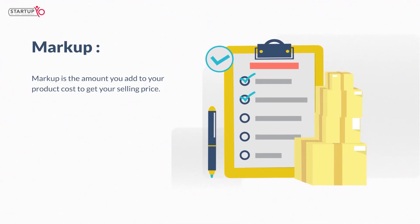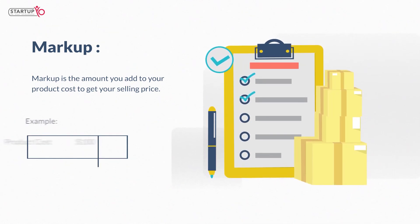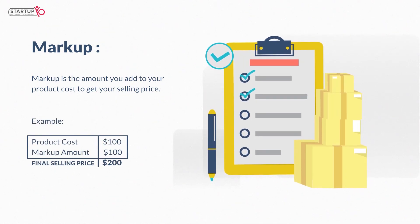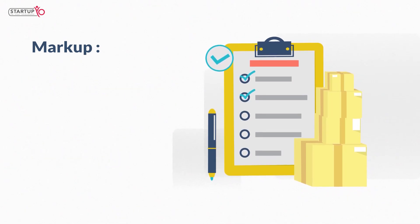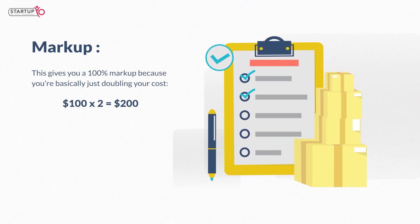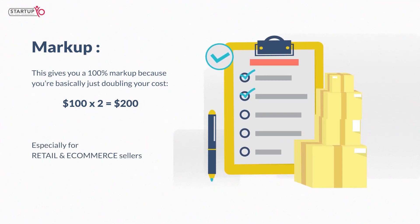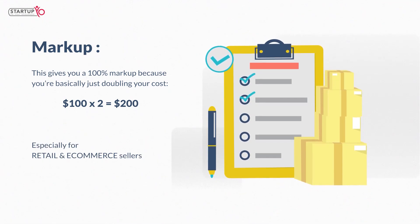Markup is the amount you add to your product cost to get your selling price. For example, if you want to simply double your product cost to get to your final selling price, this gives you a 100% markup, because you're adding 100% of your cost to get your selling price — basically just doubling your cost.